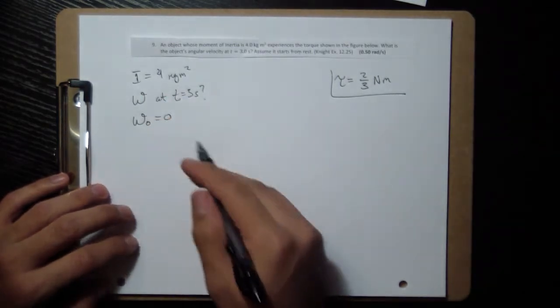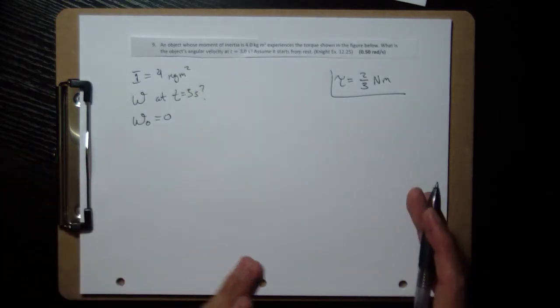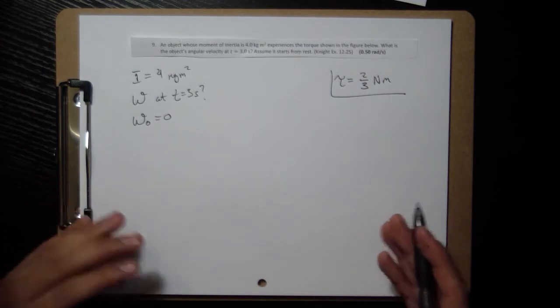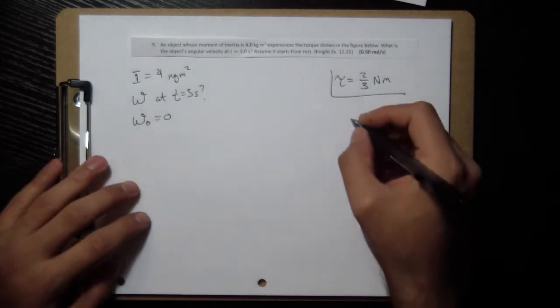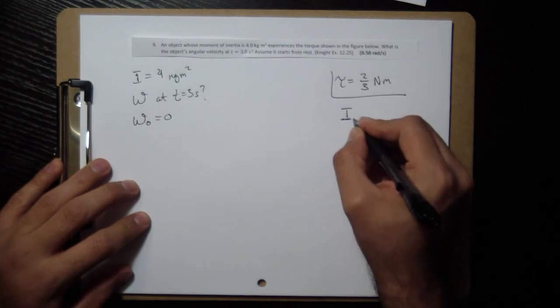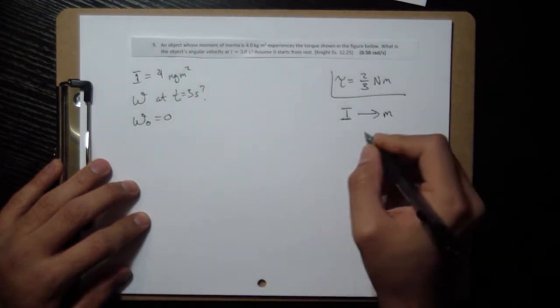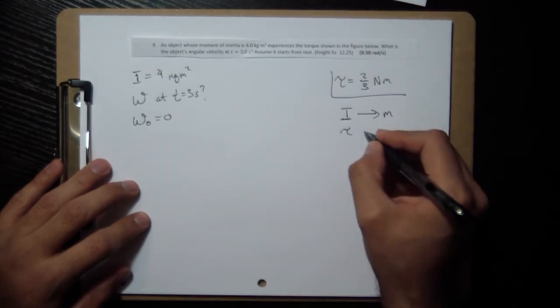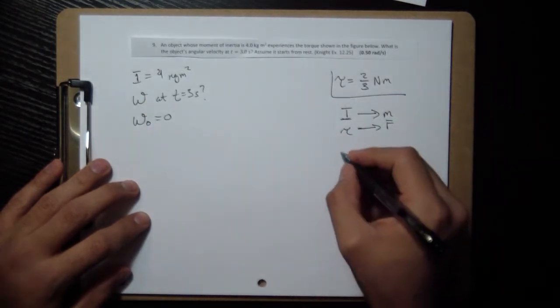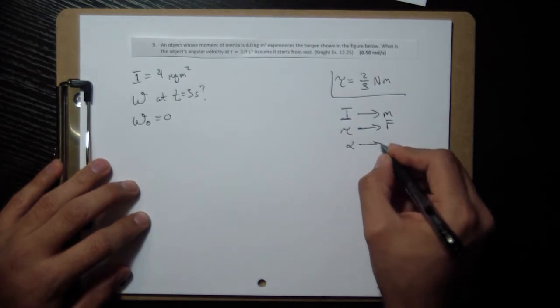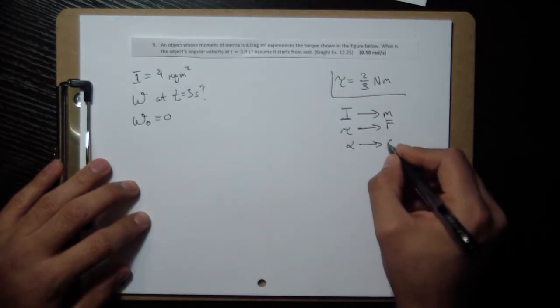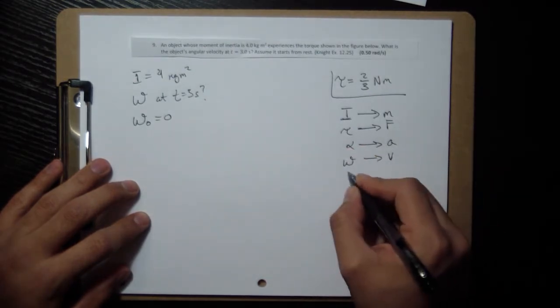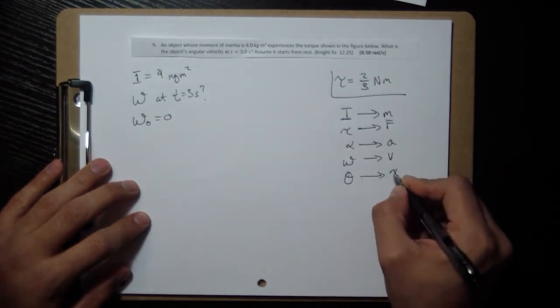And these all have kinematic equations that have basically this exact same structure as the regular kinematic equations. And the way they connect is that the moment of inertia takes the place of the mass, the torque takes the place of the force, the angular acceleration takes the place of the regular acceleration, omega, which is the angular velocity, and the angle takes the place of the position.